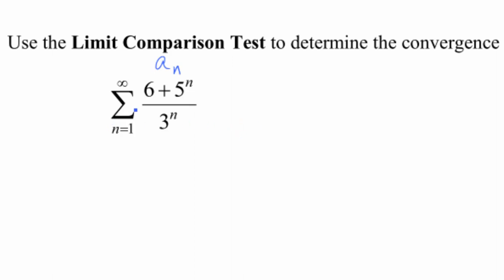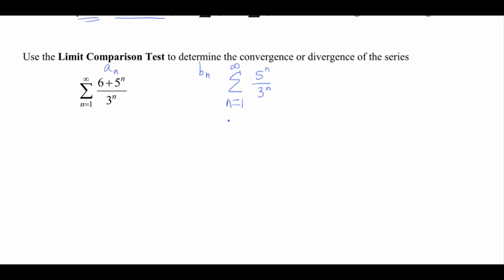Well, let's see, so as n gets really big, is this 6 in the numerator here really gonna make that much of a difference? Not especially. Okay, so let's call b sub n then the series as n goes from 1 to infinity of 5 to the n over 3 to the n.